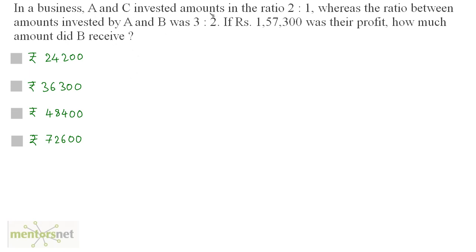A and C's ratio of investment is given, so I can write A by C is equal to 2 by 1. And another part is given to us, the ratio of A and B's investment. A by B is equal to 3 by 2. Now, what we want here is actually A is to B is to C.